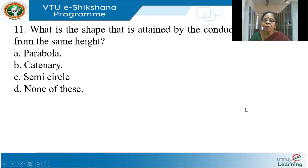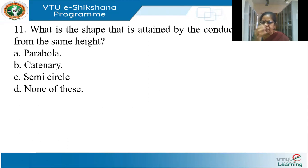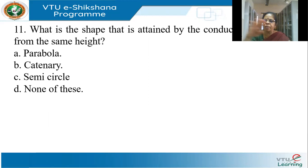What is the shape attained by a conductor when the supports are at the same height? That is the catenary. It looks like a semicircle or a parabola, but it is called a catenary. It won't be a full semicircle — there will be a slight bend like an arc, and that arc is called a catenary.